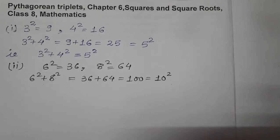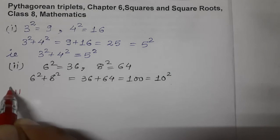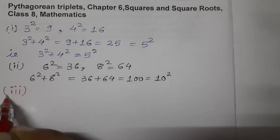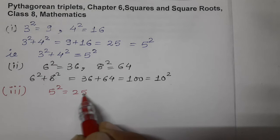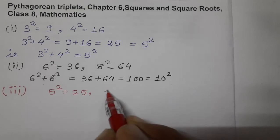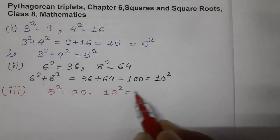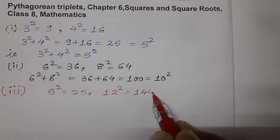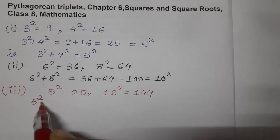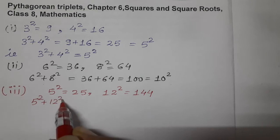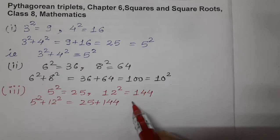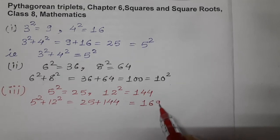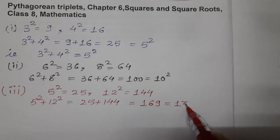Now let us see one more example. Then we will see the result. Now take 5 square. 5 square is 25. Now take 12. 12 square is 144. Now add them again. 5 square plus 12 square equals to 25 plus 144. That means on adding we will get 169, and 169 is the square of 13.